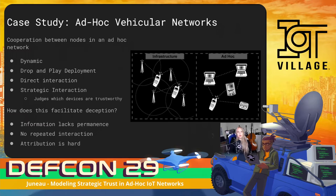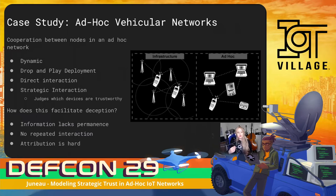And this sort of setup facilitates deception. First of all, information lacks permanence. Because vehicles are moving on and off the network after every interaction, there's often no repeated interaction between nodes. Additionally, because the devices are communicating directly, there's not a trusted third party watching this communication.